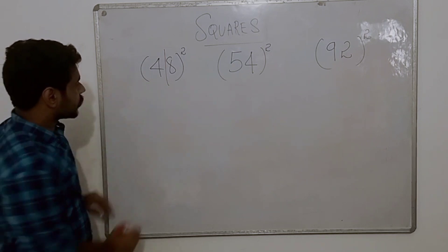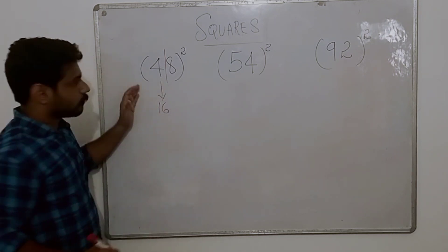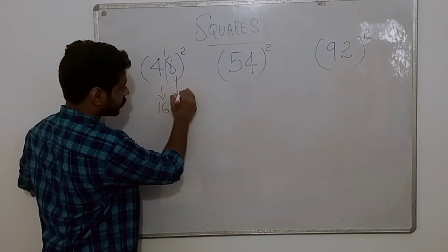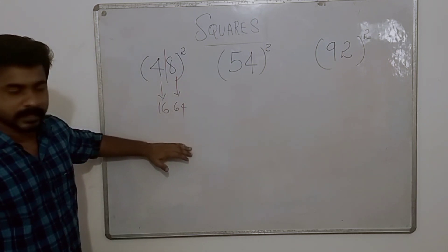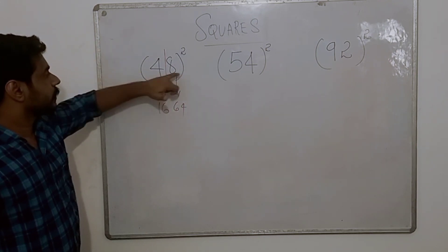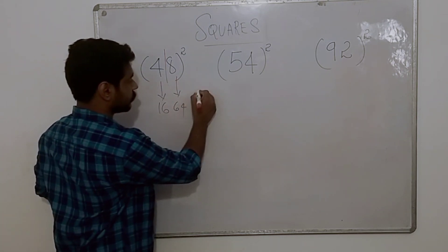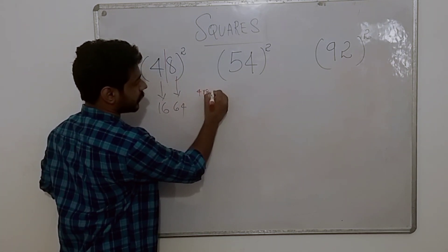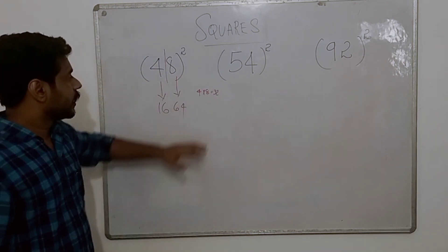So, 4 squared is 16. We split: 4 squared is 16, 4 squared part gives 60. And 8 squared is 64. We can split the number: 4 into 8. 4 into 8 is 32.